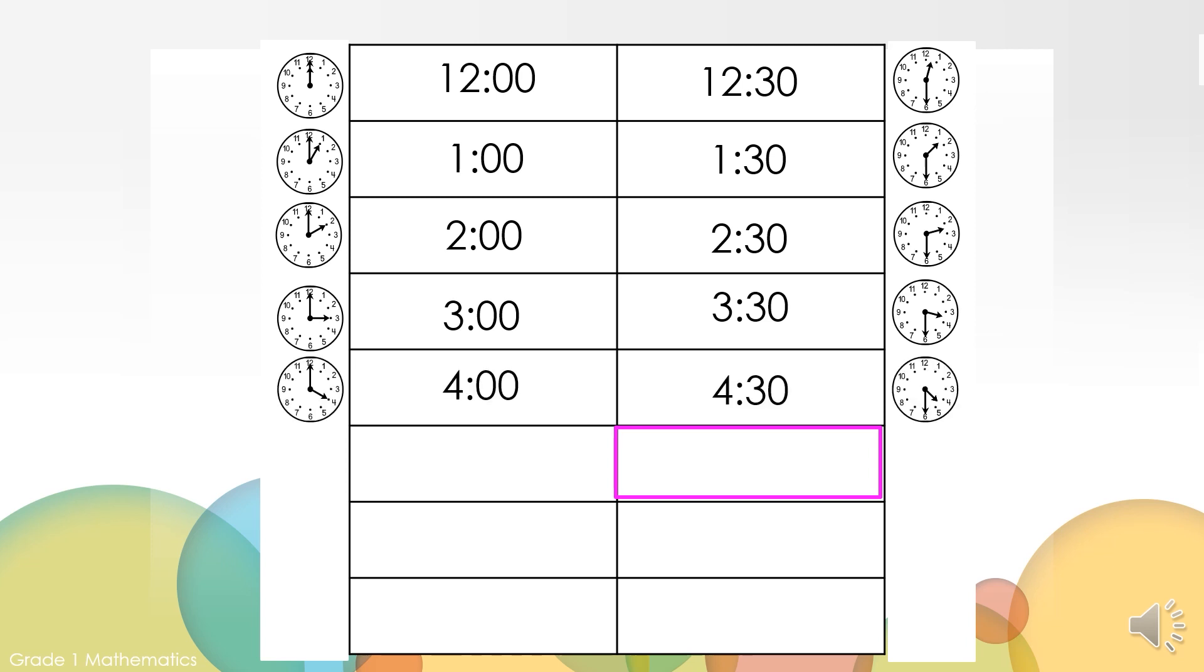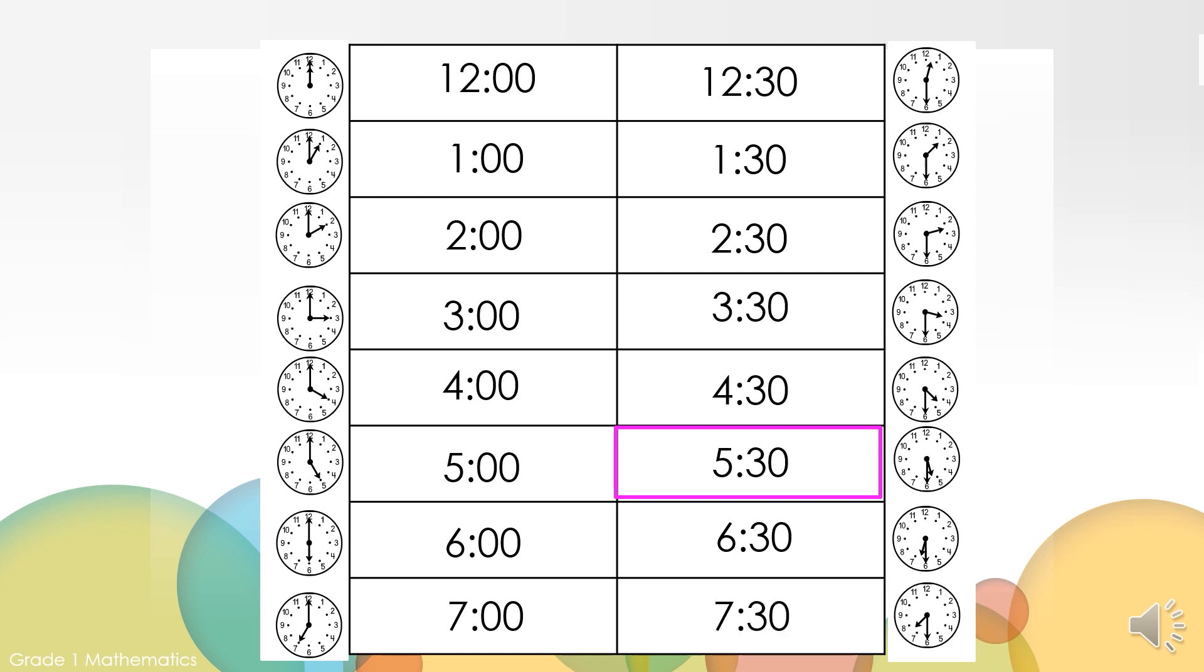4 o'clock, 4:30, 5 o'clock, 5:30. Great job. Let's keep going. 6 o'clock, 6:30, 7 o'clock, 7:30. Do you remember another way we could say 7:30? That's right. We could say half past seven and that could mean the same thing as 7:30.